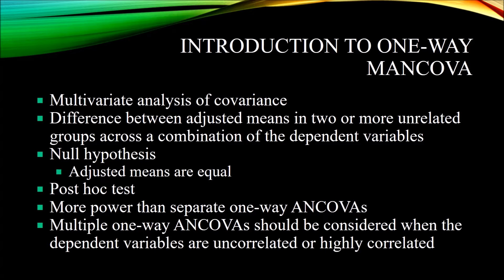It looks at the difference between adjusted means in two or more unrelated groups across a linear combination of the dependent variables. In one-way MANCOVA, we have one independent variable and that gives us one null hypothesis: the adjusted means are equal. For example, treating participants with different counseling modalities — one independent variable, treatment, with three levels: Cognitive Behavior Therapy (CBT), Gestalt therapy, and Adlerian therapy. Each represents a level of that single independent variable, and the null hypothesis is that the adjusted means for those three levels are equal.